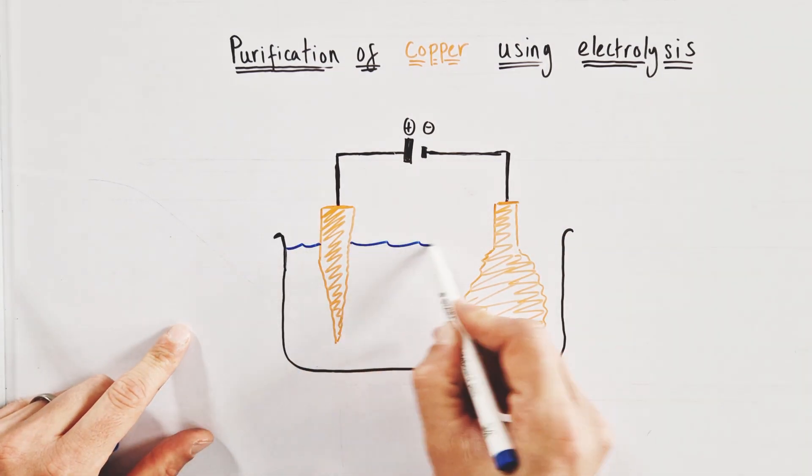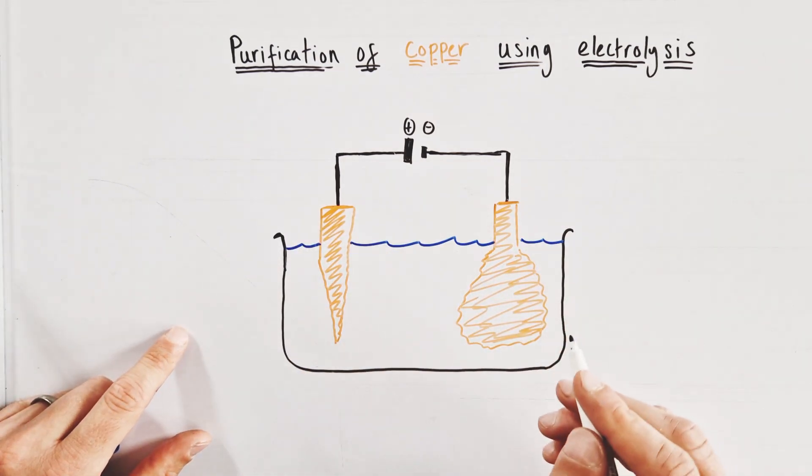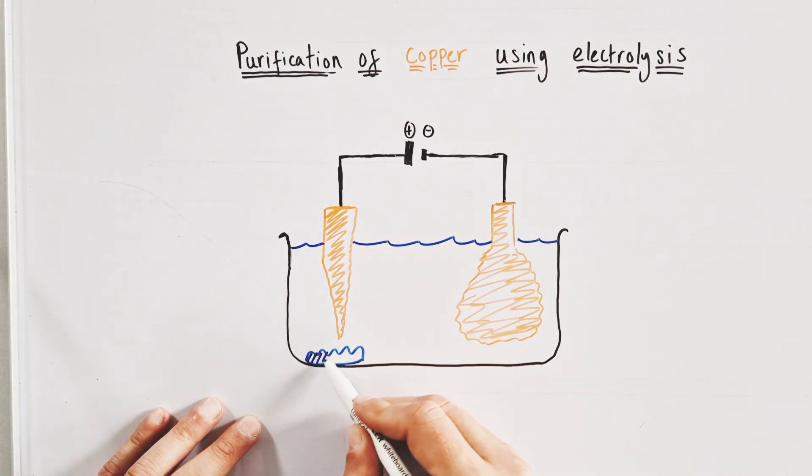The two electrodes are submerged in a solution of copper 2 plus ions, either copper sulfate or copper chloride solution.